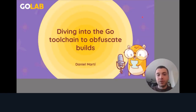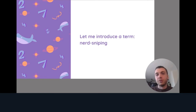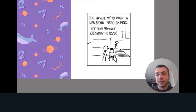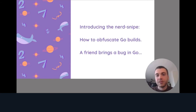Hi, my name is Daniel, and I'm going to be talking about diving into the Go toolchain to obfuscate builds. So let me introduce a term: nerd sniping. This actually comes from an XKCD comic, and it begins with somebody seeing a scientist and presenting them with a difficult problem. The scientist gets stuck thinking about that problem until they find a solution, even if there isn't a good solution.